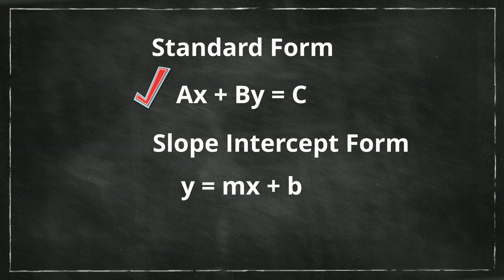Standard form is AX plus BY equals C, and slope-intercept form is Y equals MX plus B, where M is the slope and B is the Y-intercept.